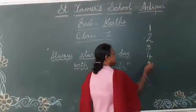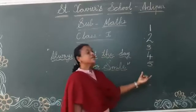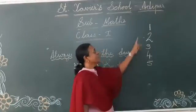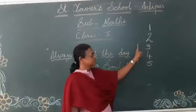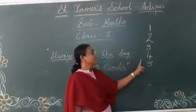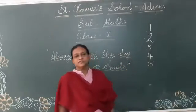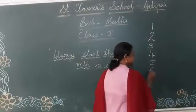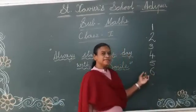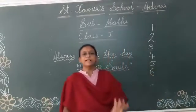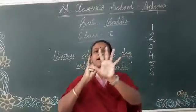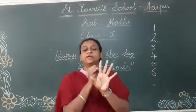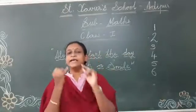Now, which number is this? This is 5. Which number is this? 5. 1, 2, 3, 4 and 5. So, can you say which number comes after 5? 6. Which number is this? 6. You can take out your fingers and count: 1, 2, 3, 4, 5 and 6.